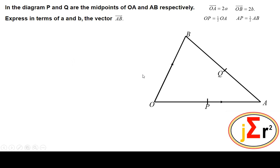On this occasion, we are required to find the vector AB. We have quite a bit of information given here, which not all of this information is necessary. The necessary information that we will make use of is OA is equal to 2A and OB is equal to 2B. We need to find the vector AB.